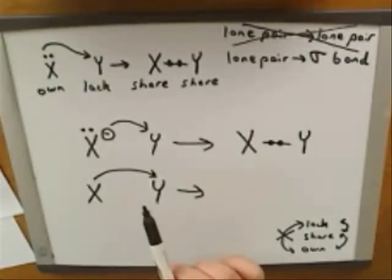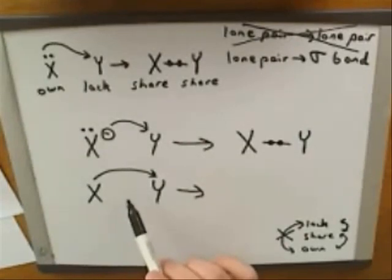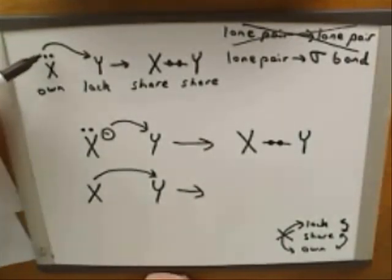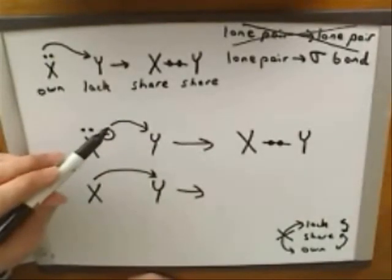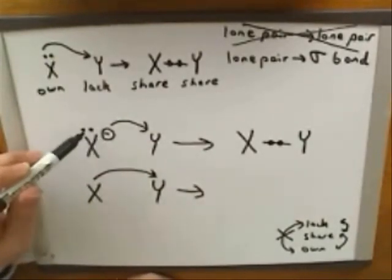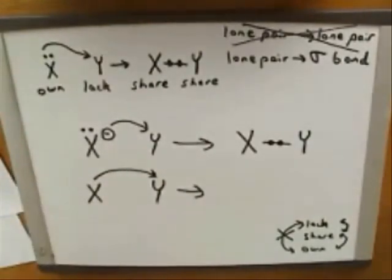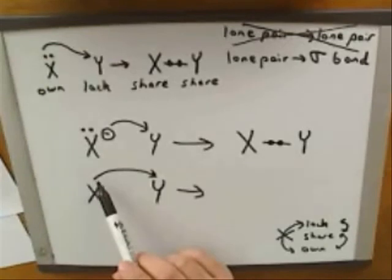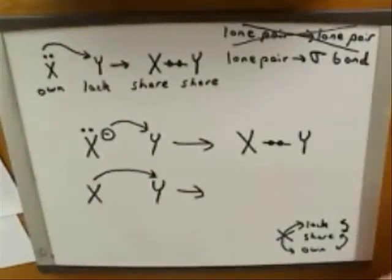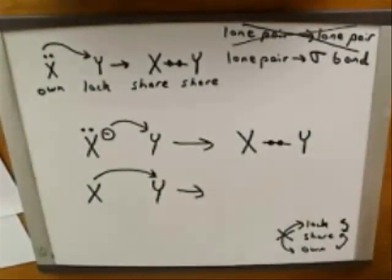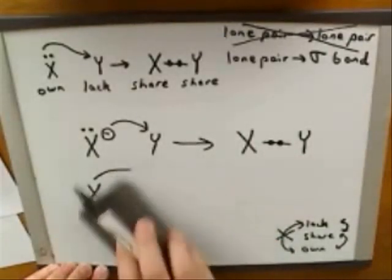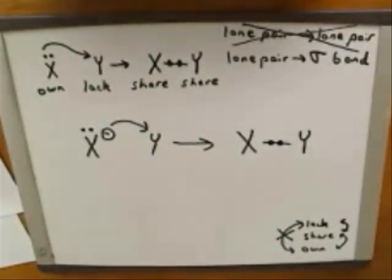To repeat: if the electrons are coming from a lone pair, you either have to draw the lone pair in, or you could have the tail of the arrow coming from a negative charge that represents the lone pair. But you can never have the tail of an arrow coming directly from an atom — that's not the conventional way to draw arrows in organic chemistry. So I'm going to erase this example because it's wrong. These are the two allowable patterns.